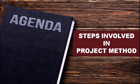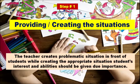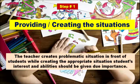Here are the steps involved in the project method. Step number one: providing or creating the situation. The teacher creates a problematic situation in front of students. While creating the appropriate situation, students' interest and ability should be given due importance.